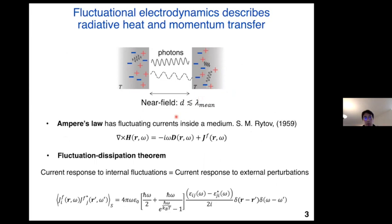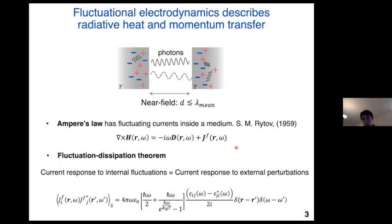The heat transfer and the force between objects are caused by electromagnetic waves due to fluctuations of charges inside the object. This fluctuation is due to both quantum as well as thermal fluctuations. One framework that describes the radiative heat and momentum transfer due to fluctuating current is known as fluctuation electrodynamics, originally proposed by Rytov back in 1953. In this framework, we add a fluctuation current term in Ampere's law, one of the macroscopic Maxwell's equations, and consider it as a source of fluctuations inside the material.